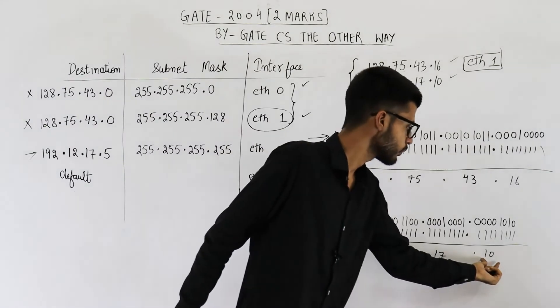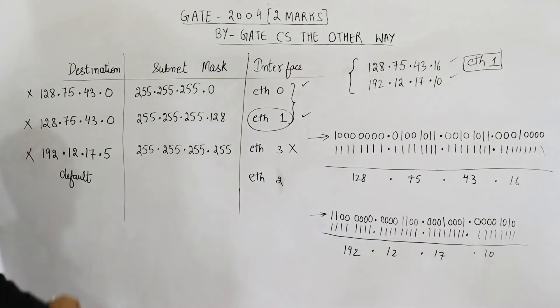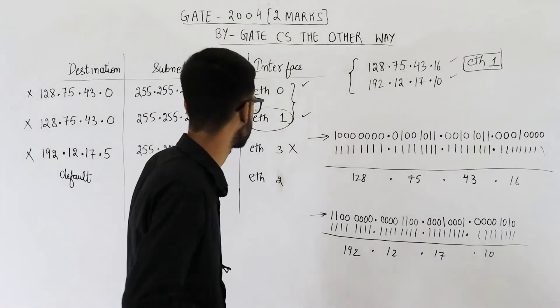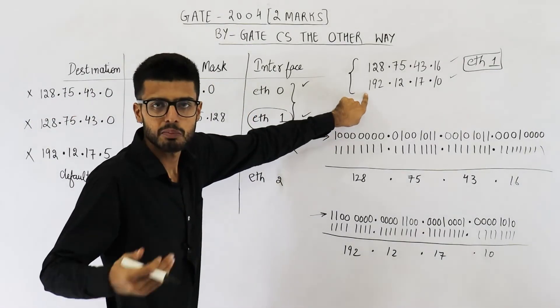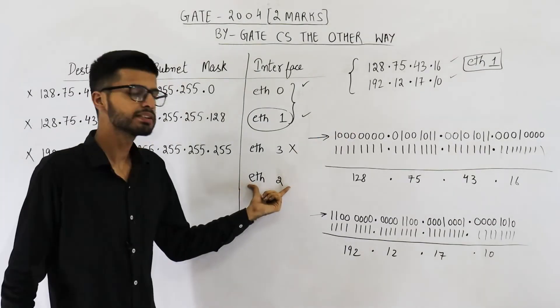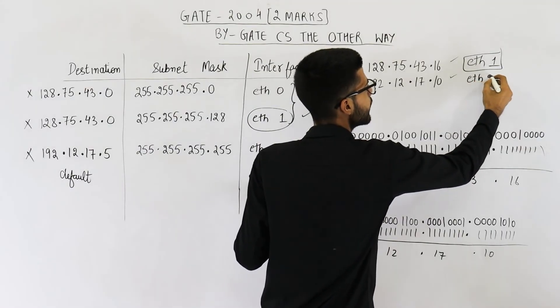But in result, we are having a 10. So the packet will not be forwarded here also. The only option left is the default interface or the default router. So this packet will be forwarded to default router or interface, which is Ethernet 2.